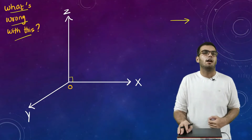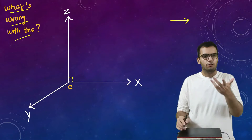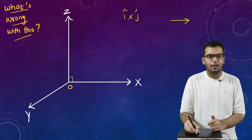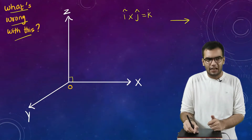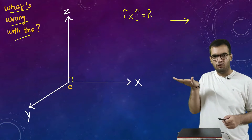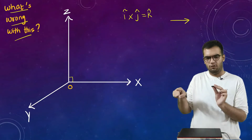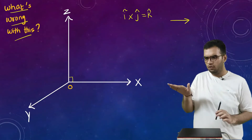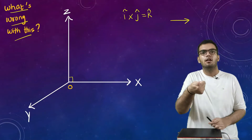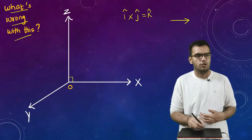Yes, there is a conceptual error in this graph. We know that if I take a cross product of i-cap with j-cap, I will get k-cap. So if this is my right hand, x-axis is i-cap and y-axis is coming in this direction. If I take the cross product, z should be in the downward direction — meaning z is pointing downward — but what I can see is z is in the upward direction.